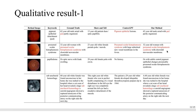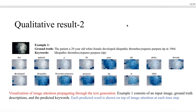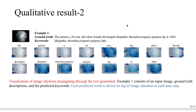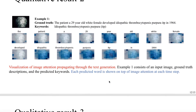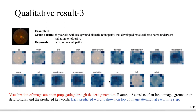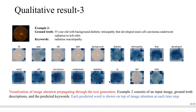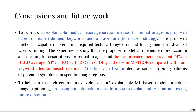This is the first qualitative result. You can see that our method performs better than the other baselines. This second qualitative result is a visualization of image attention propagation through the text generation. And here is one more qualitative result.